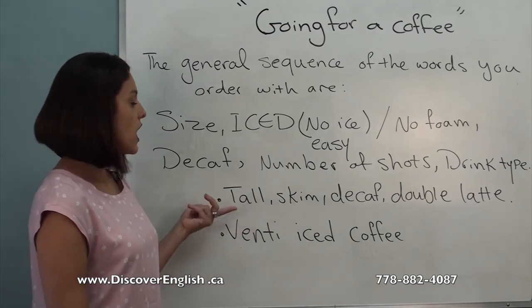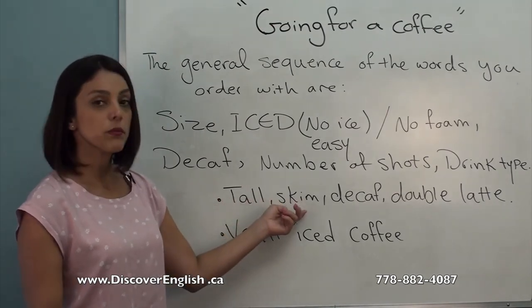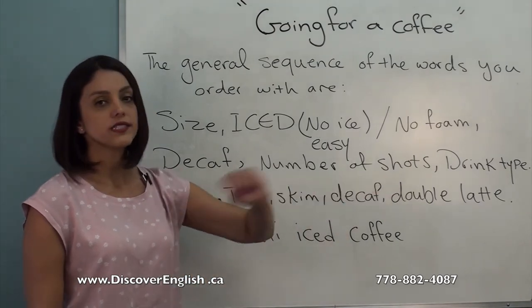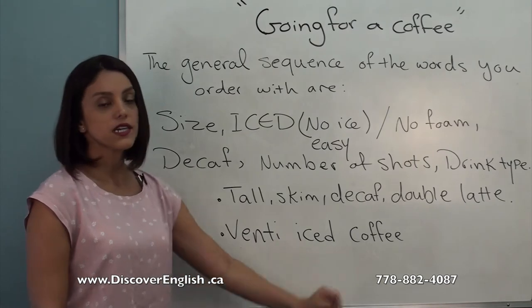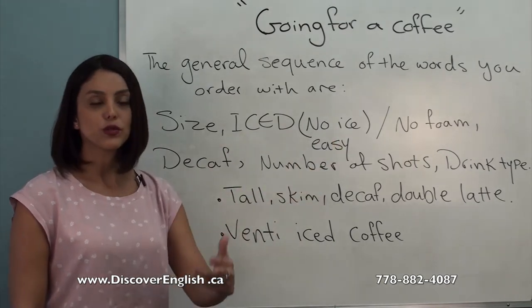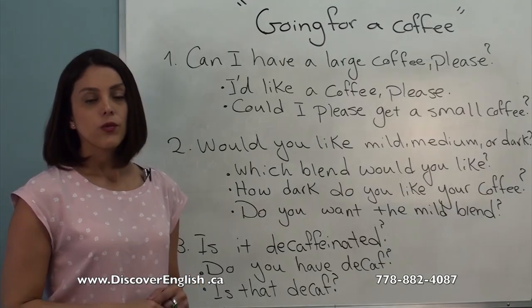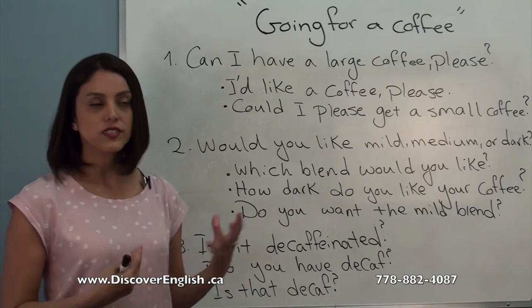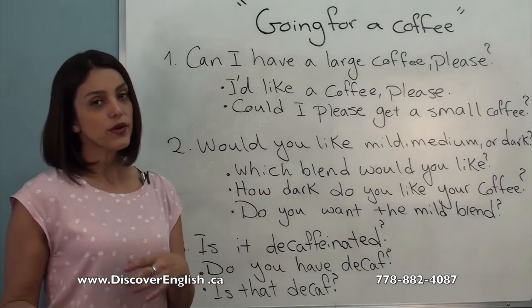After the number of shots, you say the drink type — blonde, latte, whatever you want. For example: 'I want a tall skim decaf double latte' — 'skim' means non-fat milk. Or simply 'venti iced coffee.' These are the order of words to use when you place your order.